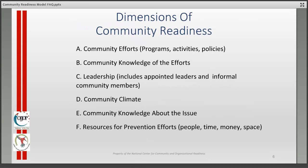There are six dimensions for the community readiness model. The first dimension is community efforts, which includes the programs, activities, and policies that are already in place. The second dimension is community knowledge of those efforts. The third dimension looks at leadership, including appointed leaders as well as informal community members who may have influence. The fourth dimension is community climate. The fifth dimension is community knowledge about the issue. And the sixth dimension is resources for prevention efforts — that includes people, time, money, and space.